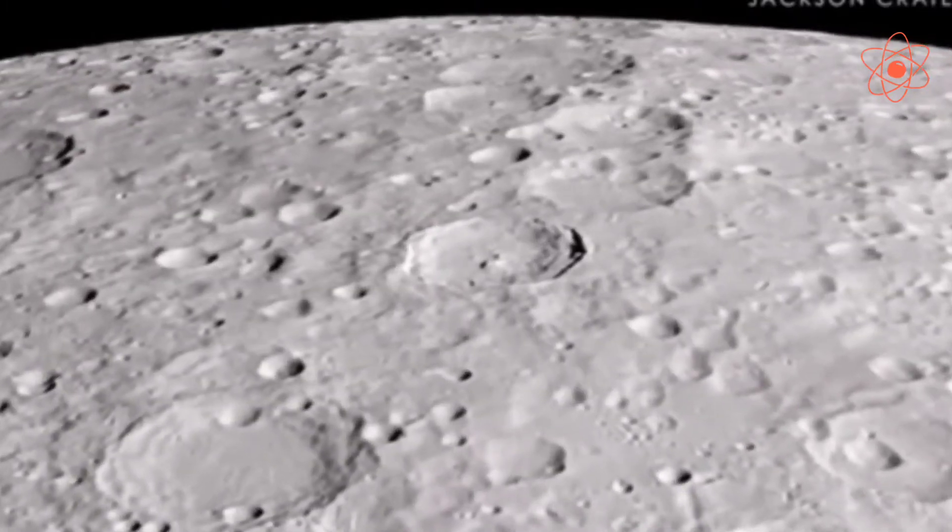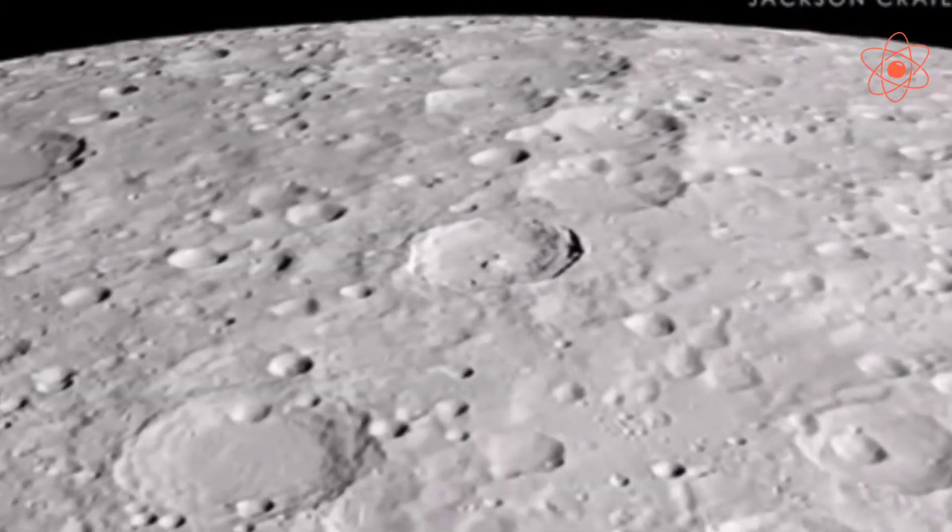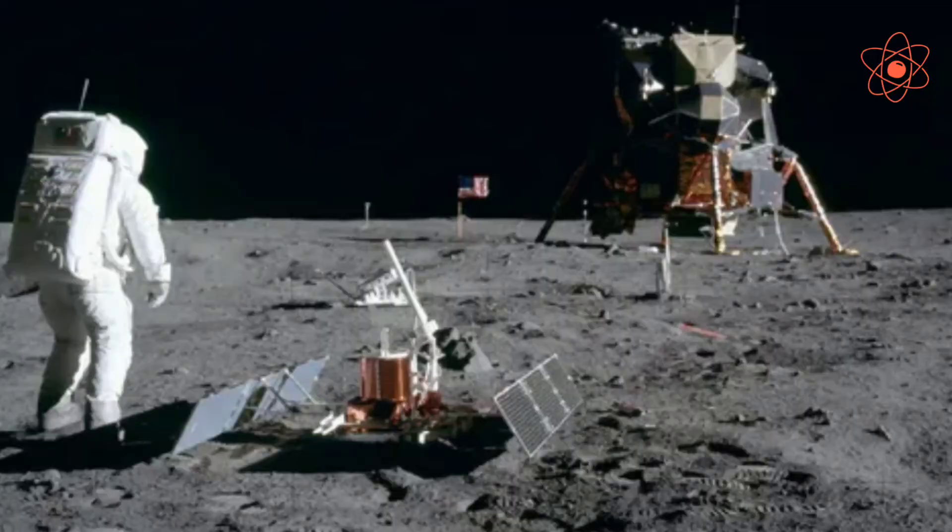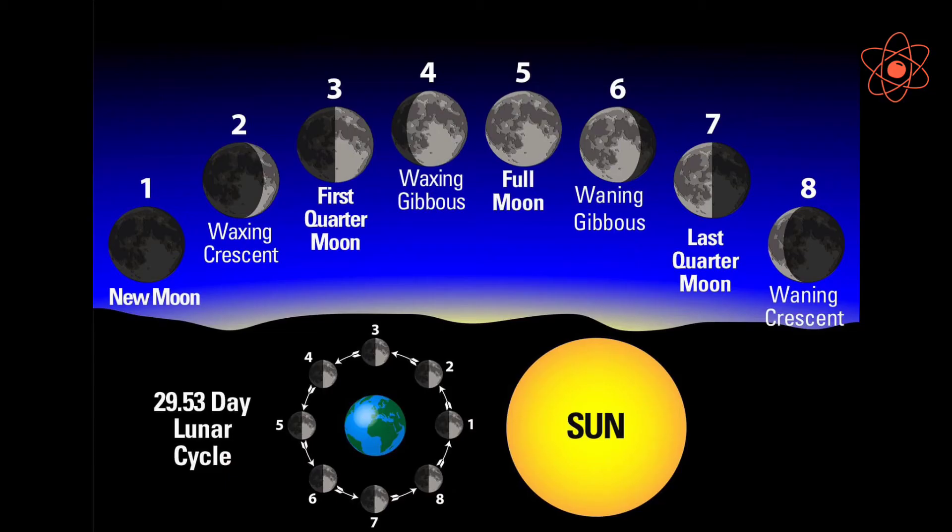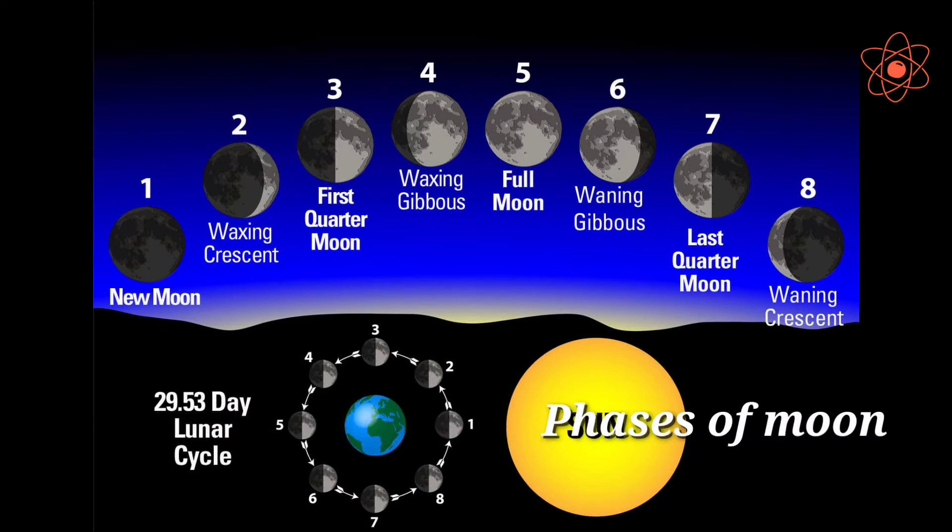It has huge hollow depressions called craters. No life exists on the Moon because of the absence of atmosphere. You must have noticed the various shapes of the Moon. These are called the phases of the Moon.